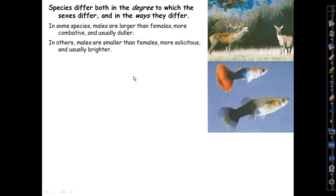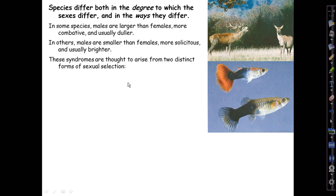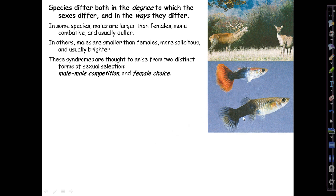In others, like these fish — not guppies, but I believe poeciliids related to guppies in the same family — the males are smaller than the females, usually more solicitous and usually brighter. These syndromes are currently thought to arise in the main from two distinct forms of sexual selection: male-male competition, which is operative in elk, and female choice, which is operative in these fishes.